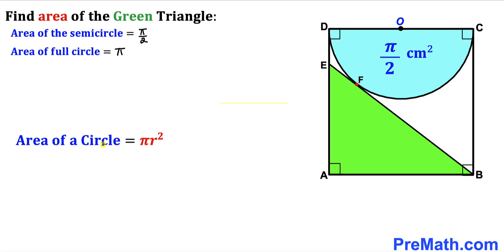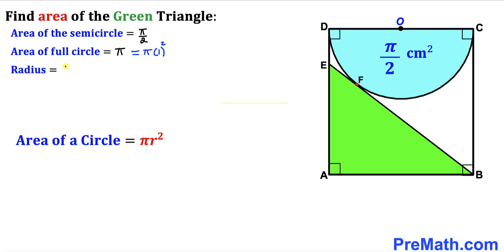Recalling the area of a circle formula: Area = πr², where r is the radius. In our case, the area of the full circle is π, which can be written as π × 1², so our radius is 1. Therefore, the radius of this semicircle turns out to be 1 centimeter.